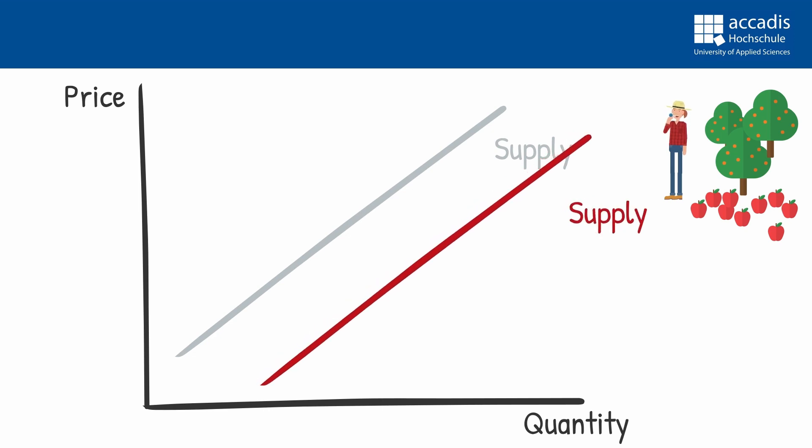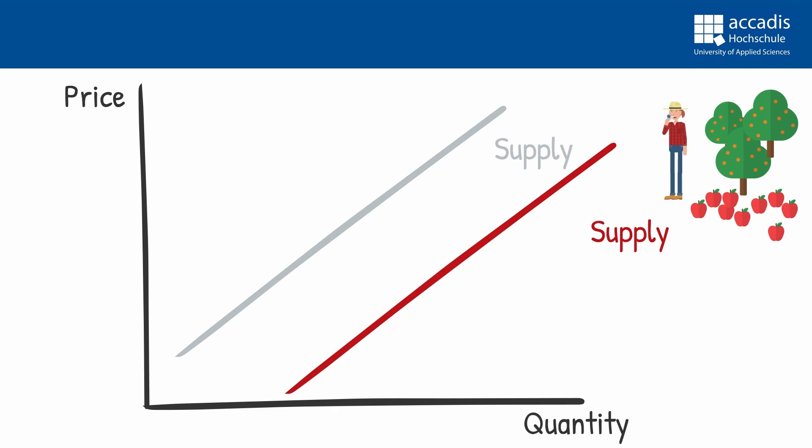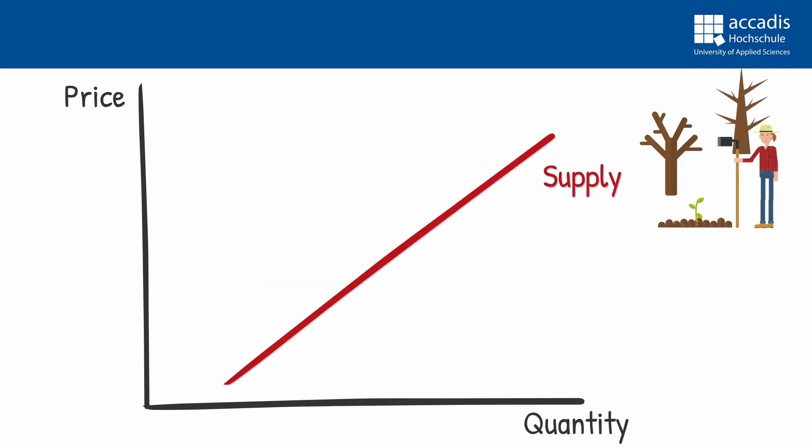So such an increase in productivity will shift our supply curve down and to the right. Firms will start making profits at lower revenue per unit, so lower prices because they now have lower costs per unit. So they can supply higher quantities at any given price.